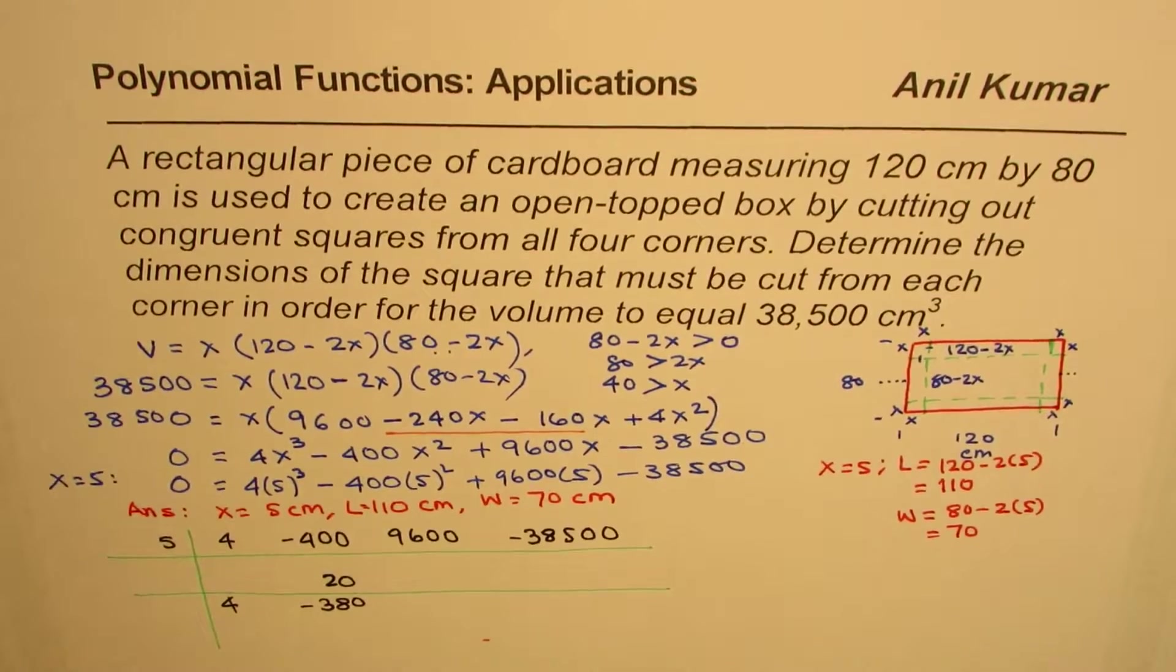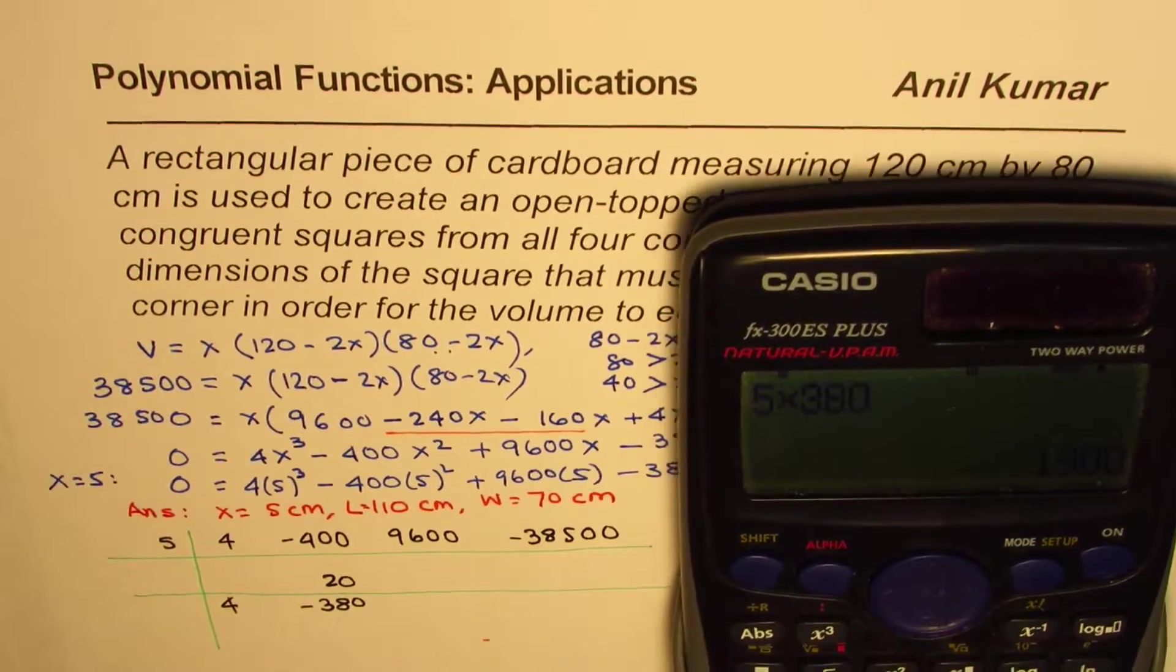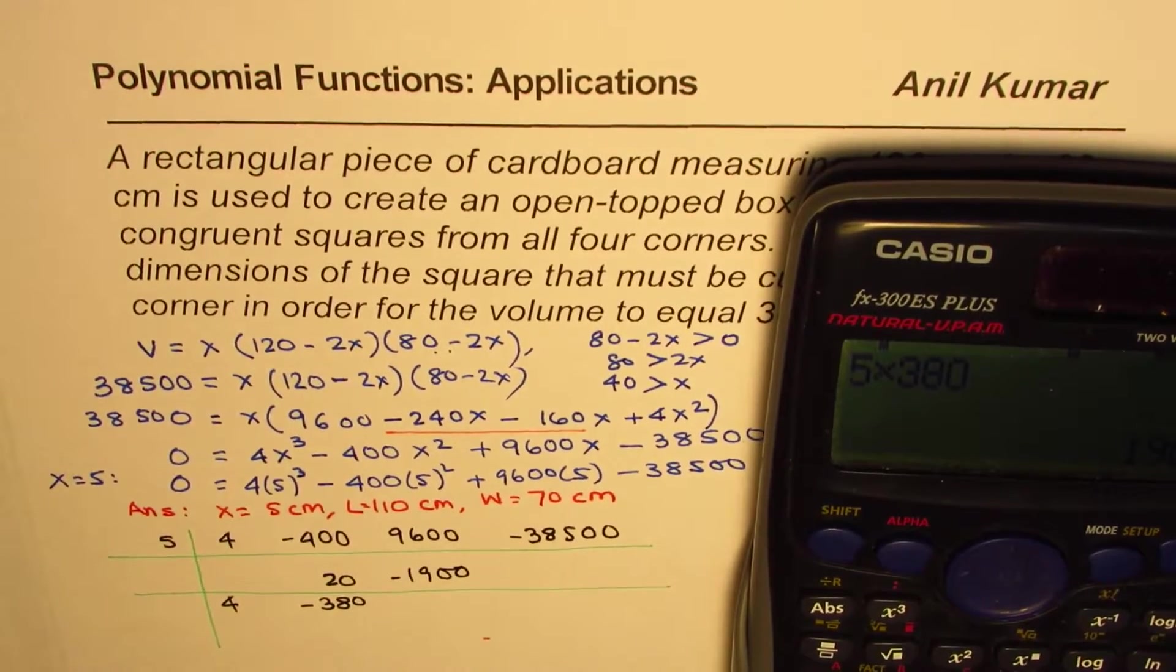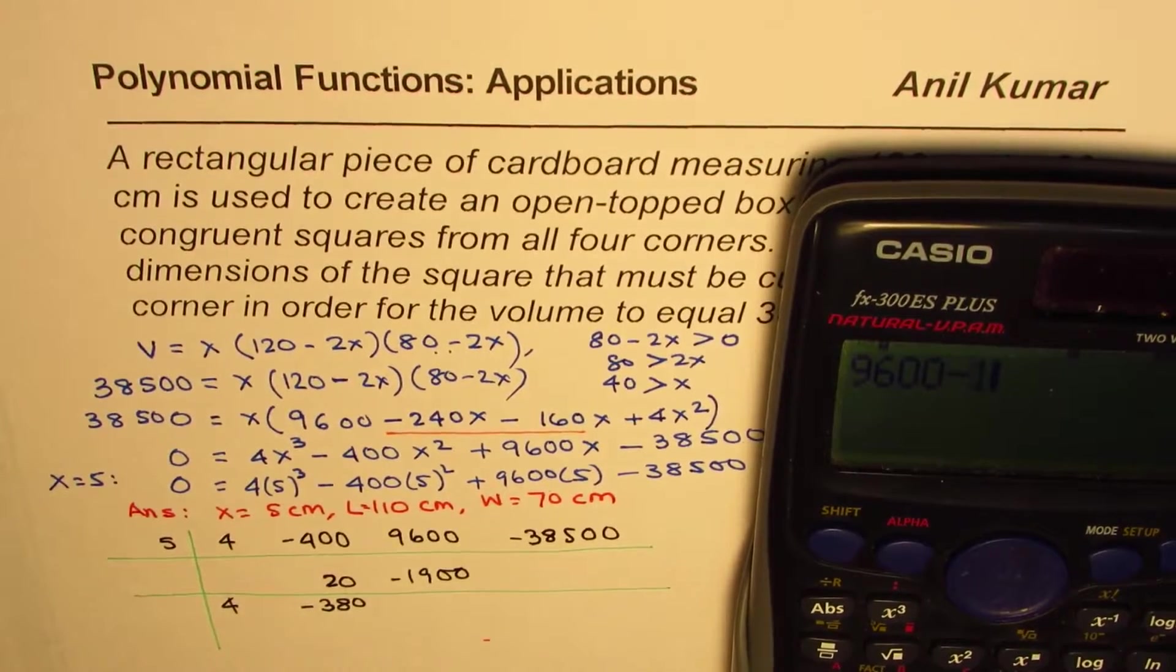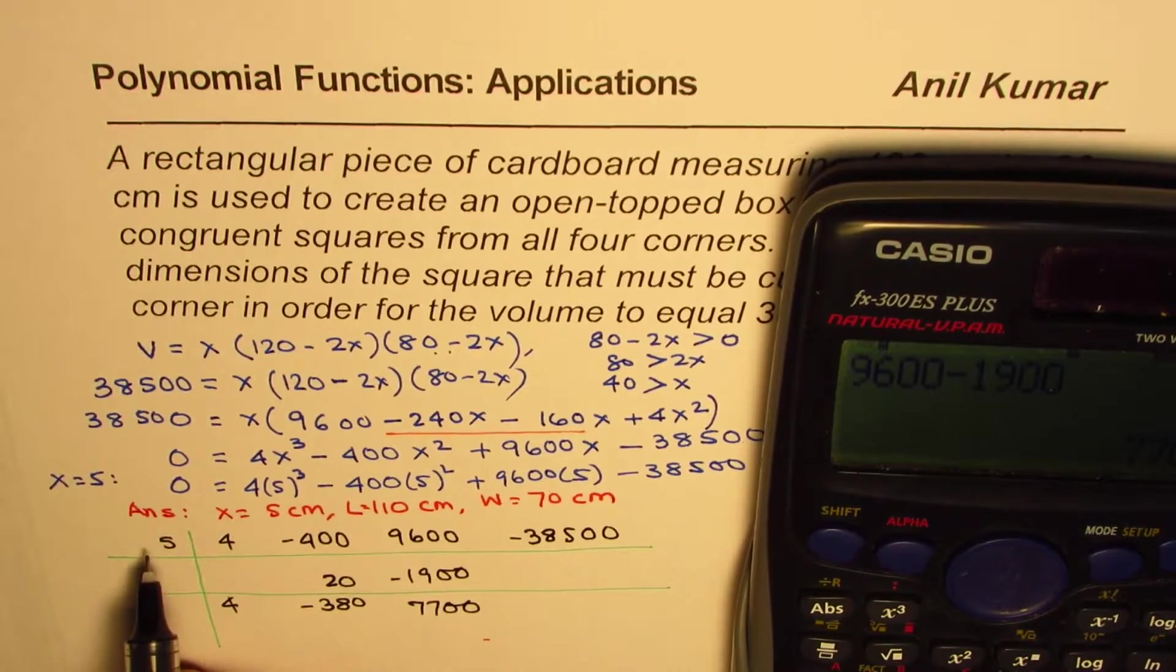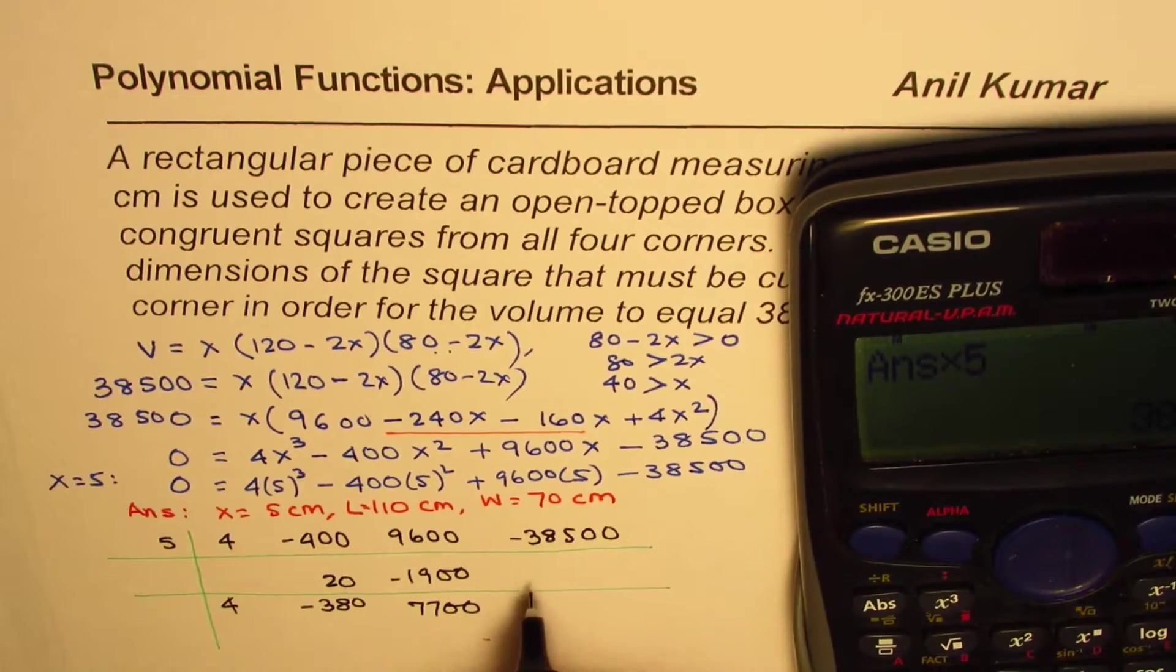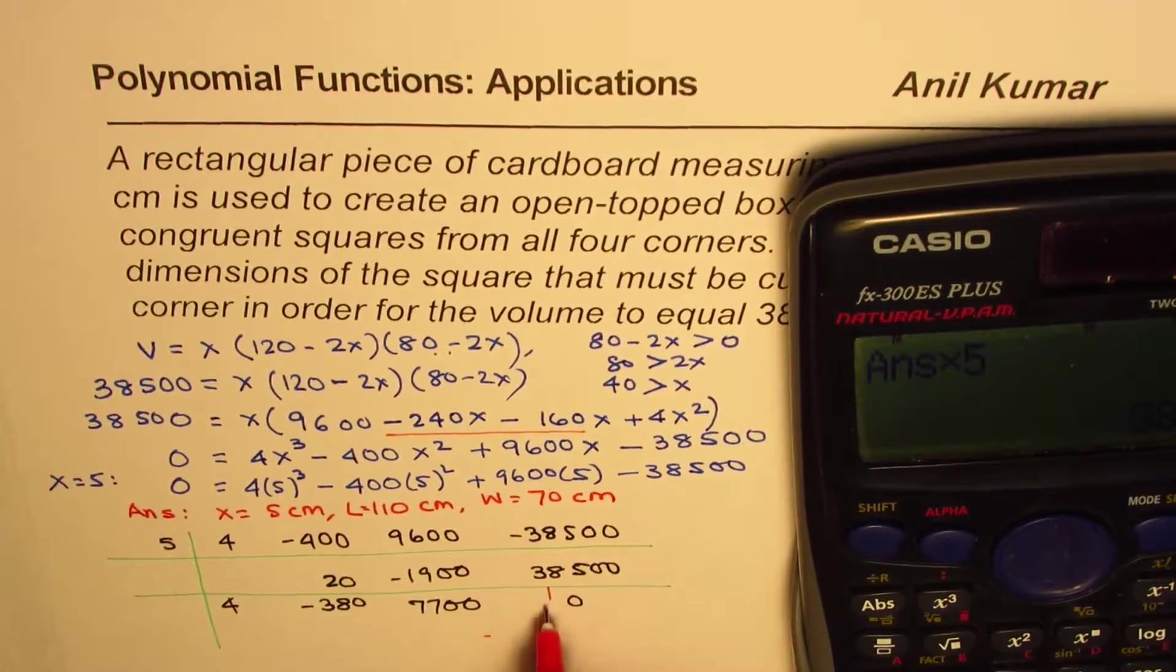And now let's use calculator, 5 times 380 with a minus sign, we'll put 1,900, so we have minus 1,900. And when we add it up, that is to say, 9600 minus 1,900 equals 7,700. And when we multiply 5 by 7,700, we get 38,500. And when you add this up, as expected, you get 0 remainder. So that clearly gives you a quadratic equation.